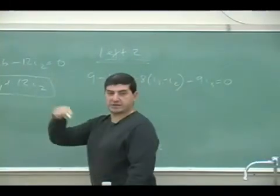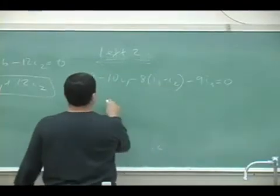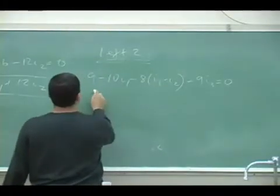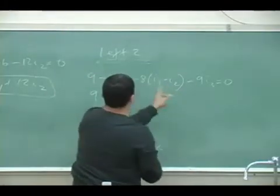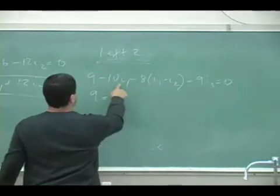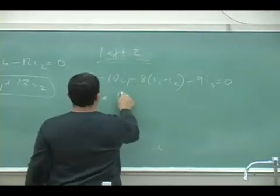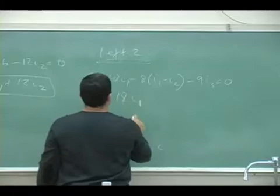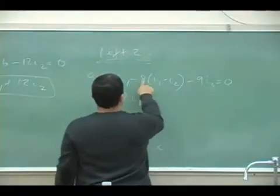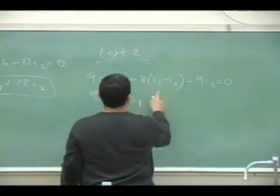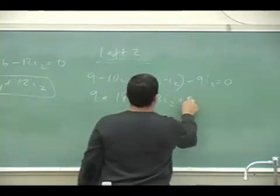And there's nothing on the bottom. So you're left with 9 is equal to, this one goes to the other, everything goes to the other side. 10i1 plus 8i1 is 18i1. Then this goes to the other side, so that's negative 8i2 plus 9i3.